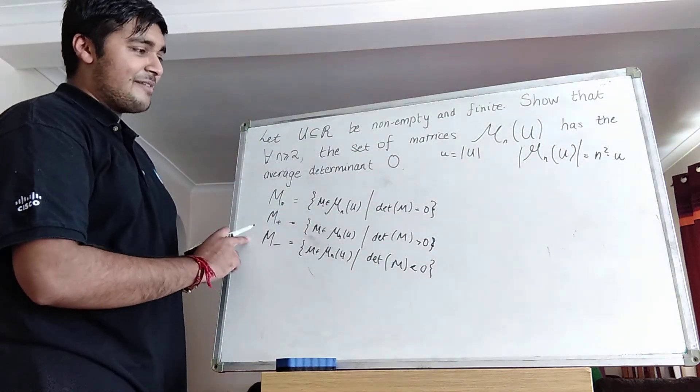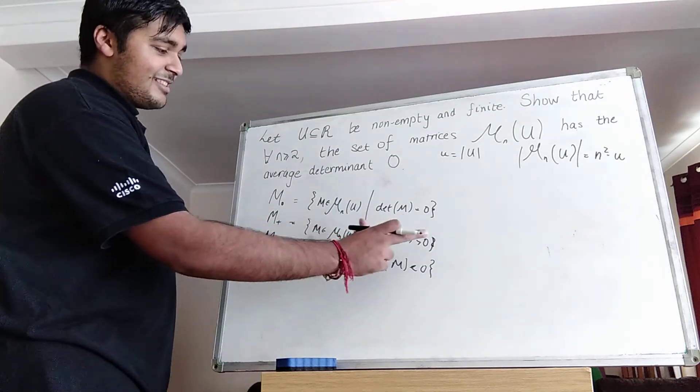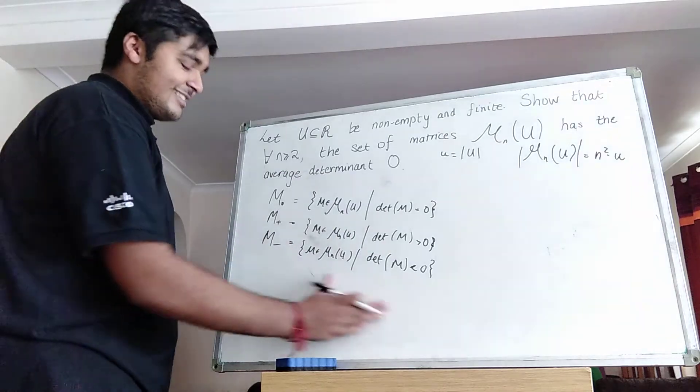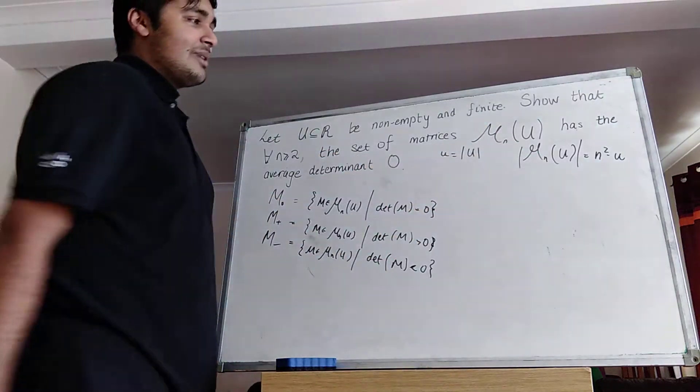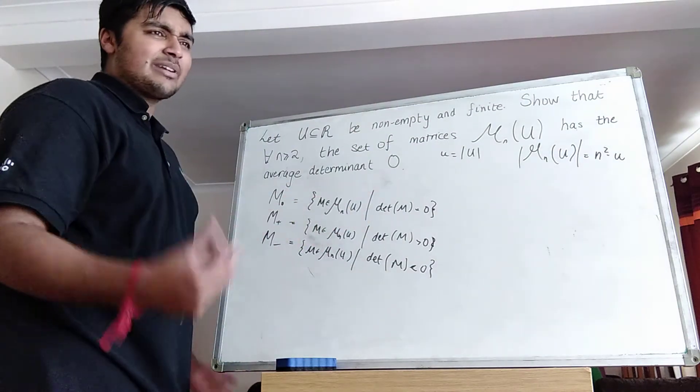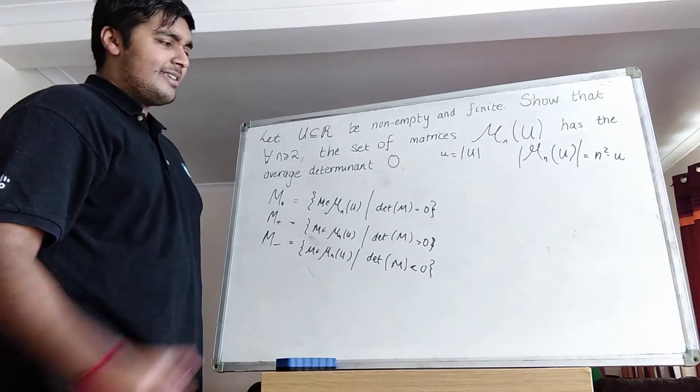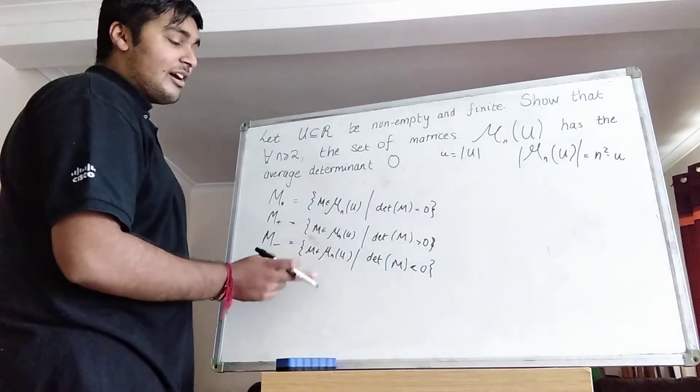So we're going to work out the average determinant. So that's going to be the determinant of the matrices in this guy added up plus the determinant of the matrices in this guy added up and the determinant of the matrices in this guy added up divided by u to the n squared. But because we're adding up a bunch of zeros here this is not going to contribute anything in the sum of the numerator. So we only need to consider adding up the determinants of these two guys.